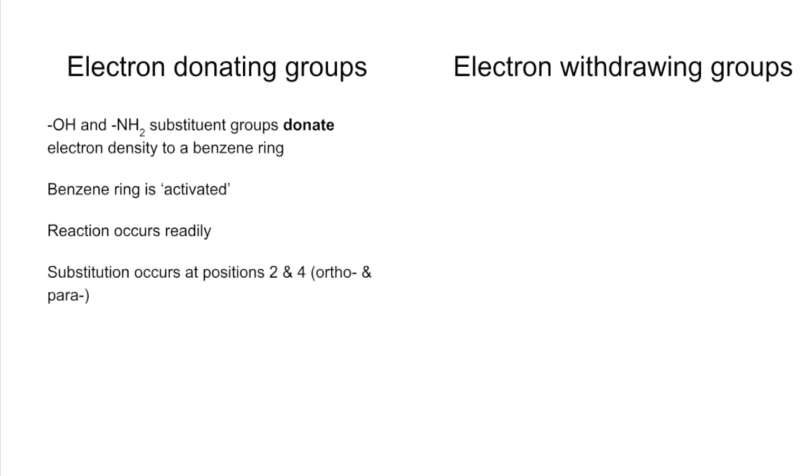Substitution occurs at positions 2 and 4, also known as the ortho and para positions. For example, phenol reacts with nitric acid and produces 2-nitrophenol and water, and 4-nitrophenol and water.